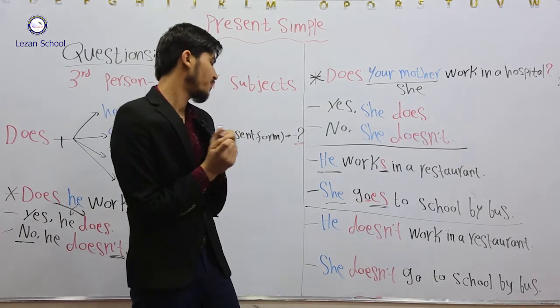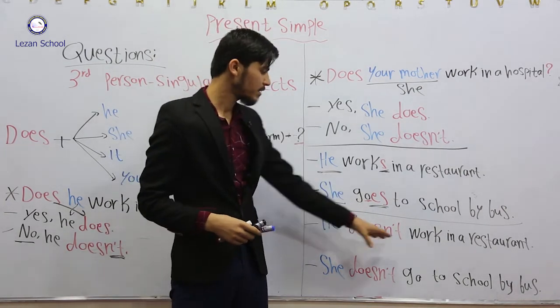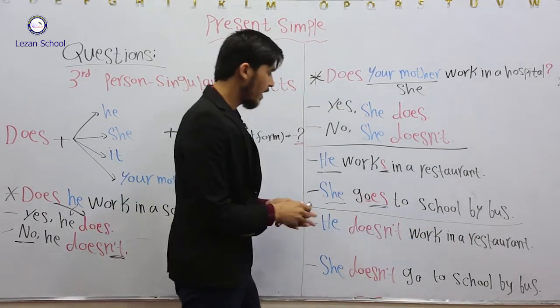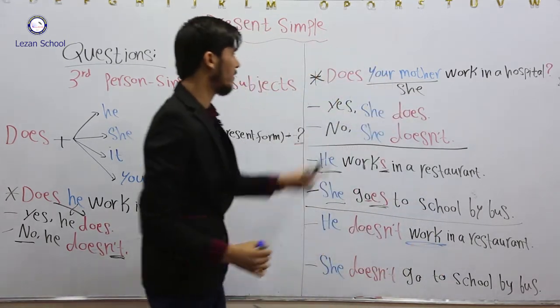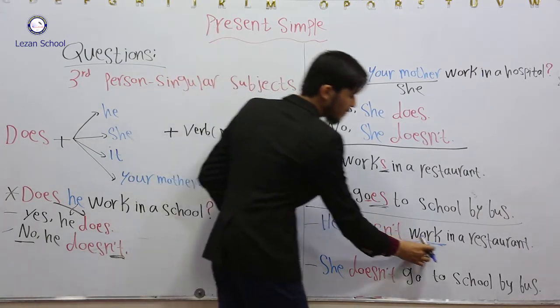If we change the sentence into negative, we use doesn't - does plus not. He doesn't work in a restaurant. Again, like in question form...